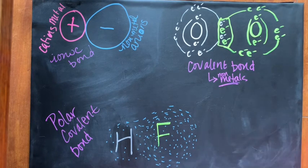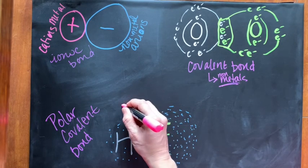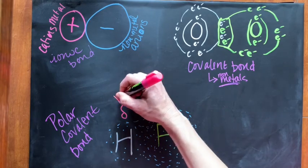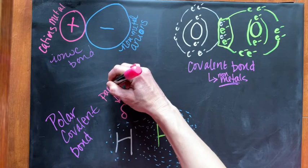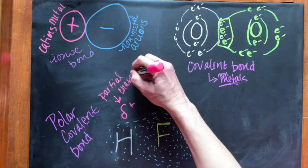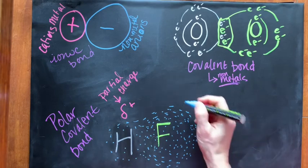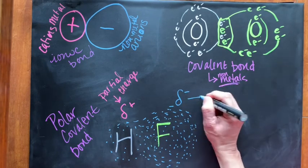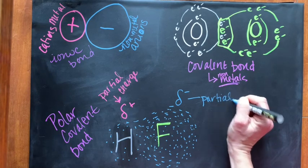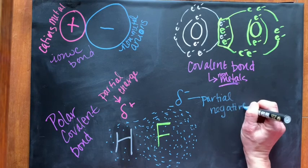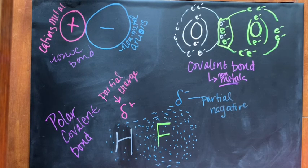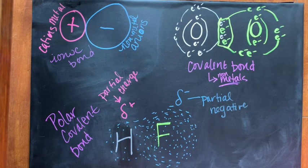Not full-on ions, but partial ions. This molecule would have a partial positive charge and a partial negative charge, represented by the lowercase Greek letter delta. So hydrogen would be delta-positive and fluorine would be delta-negative. These partial charges are responsible for some interesting properties — HF in this case is an acid — and polar covalent bonds are extremely important in terms of water.